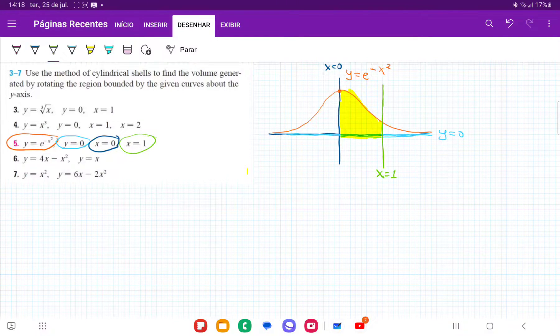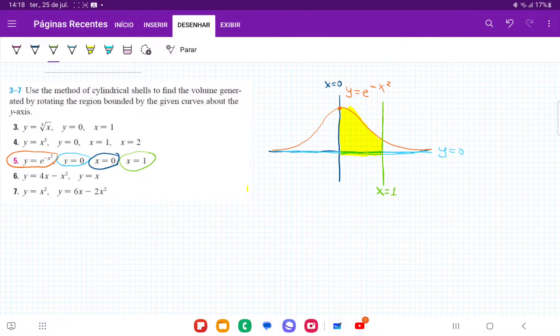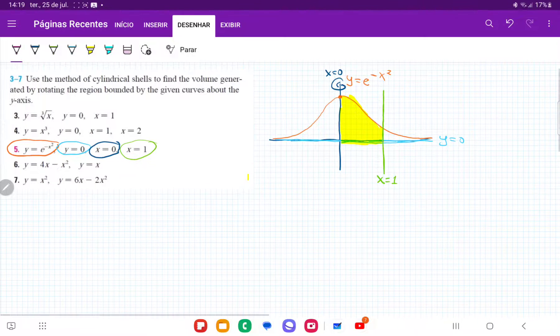So for number five, we're taking the area bounded between these curves, and then we're revolving it about the y-axis, so about here. I've gone ahead and I've drawn these lines, and I've shaded the area between them, and now let's try to revolve them.